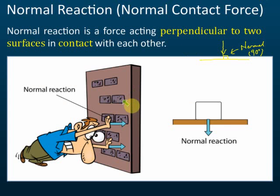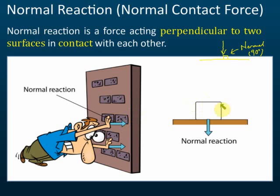For example, a man pushes a wall. He pushes on the wall, so he gives a normal reaction to the wall. This pushing force is called the normal reaction — he gives a normal reaction to the wall.